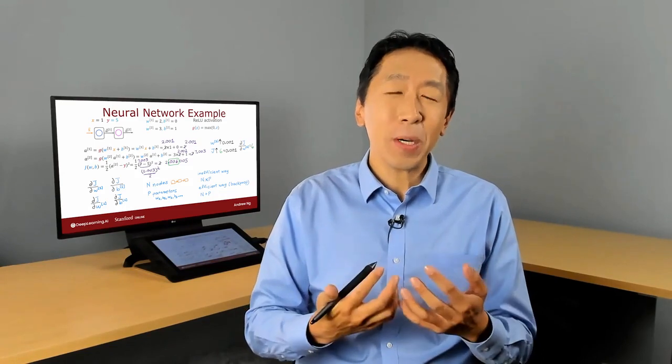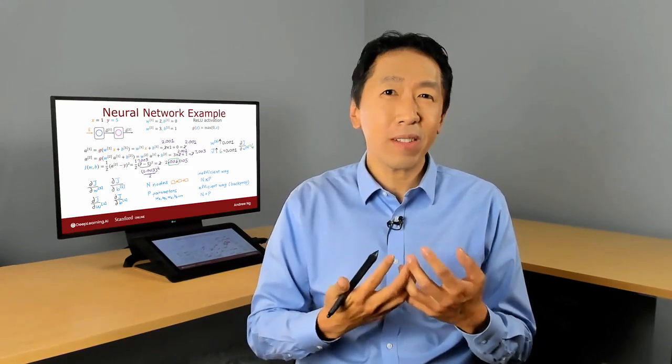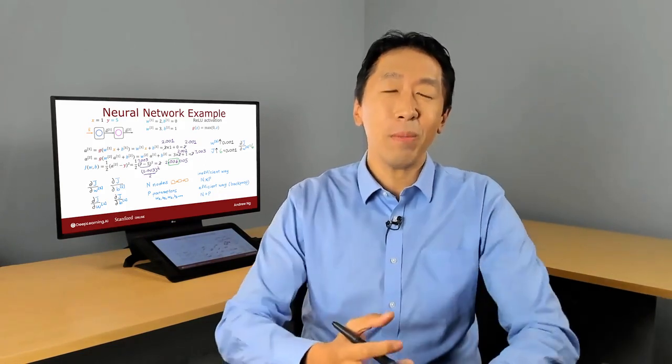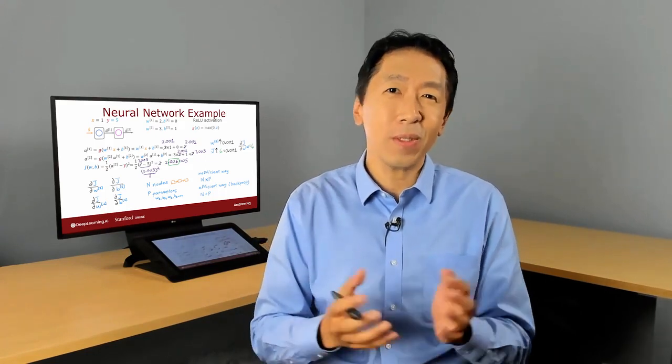So many years ago, to use neural networks, the bar for the amount of calculus you had to know actually used to be higher. But because of automatic differentiation algorithms, usually based on the computation graph, you can now implement a neural network and get derivatives computed for you easier than before. So maybe with the maturing of neural networks, the amount of calculus you need to know in order to get these algorithms to work has actually gone down, and that's been encouraging for a lot of people. And so that's it for the videos for this week. I hope you enjoy the labs and I look forward to seeing you next week.